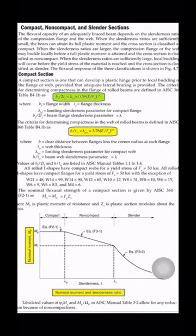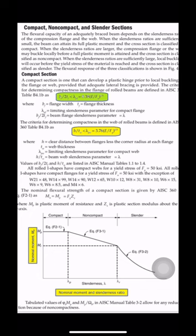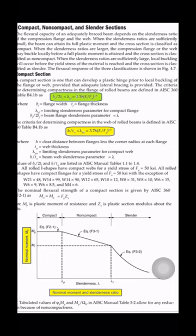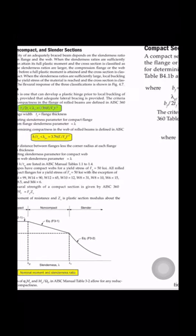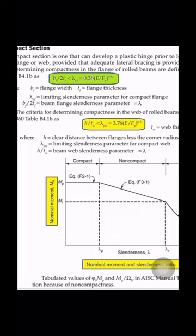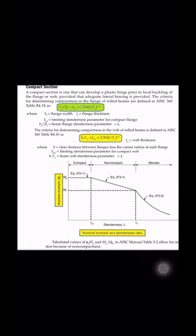When the slenderness ratios are larger, the compression flange or web may buckle locally before full plastic moment is attained and the cross section is classified as non-compact. When the slenderness ratios are sufficiently large, local buckling will occur before the yield stress of the material is reached and the cross section is classified as slender.